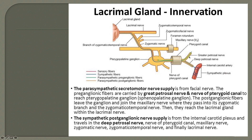In the foramen lacerum, the greater superficial petrosal nerve and the deep petrosal nerve join together to form this combined nerve, also called the nerve of the pterygoid canal — or the Vidian nerve. The preganglionic parasympathetic fibres then relay in the pterygopalatine ganglion.